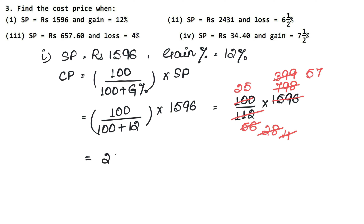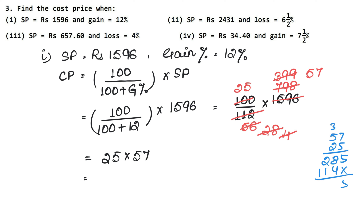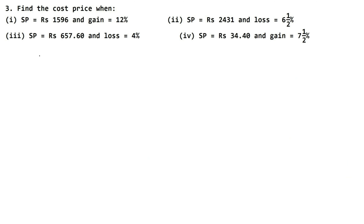So CP equals 25 into 57. Let me work that on the side: 57 multiplied by 25 — 5 sevens are 35, carry; working through the multiplication gives us 1425. So our cost price is Rs. 1425. That is the answer for the first part. Let's do the next part now.